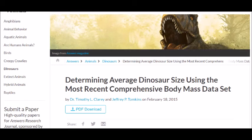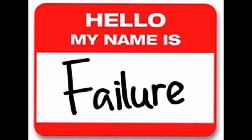Let's take an example. Answers in Genesis wrote an article that attempts to demonstrate their long-made claim concerning how the average dinosaur size was that of a sheep, titled, Determining Average Dinosaur Size Using the Most Recent Comprehensive Body Mass Data Set.